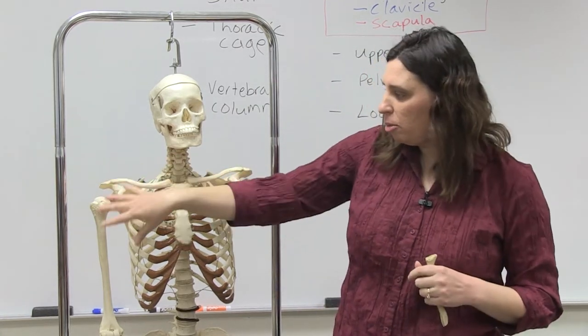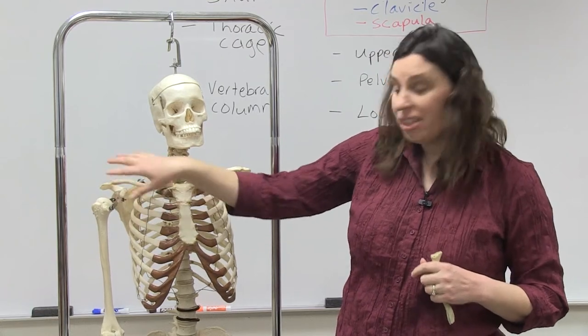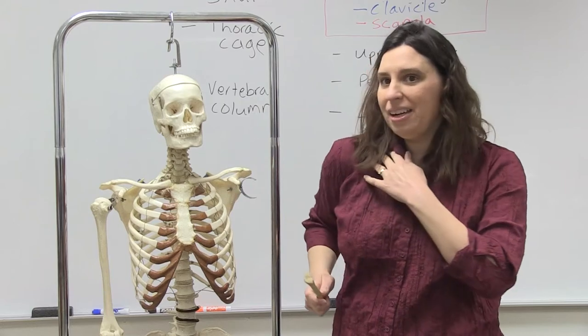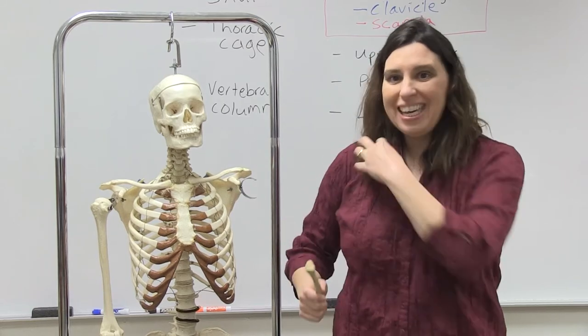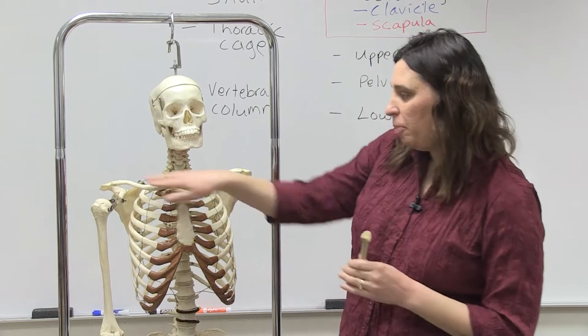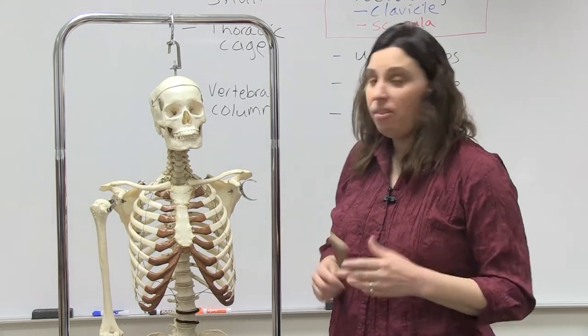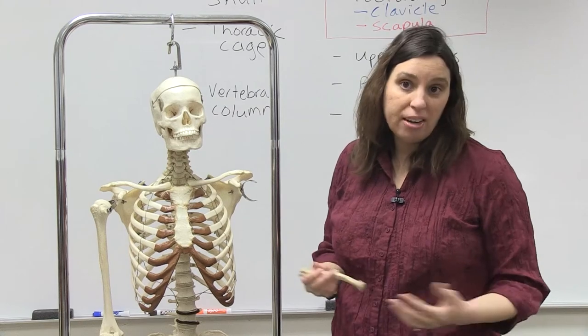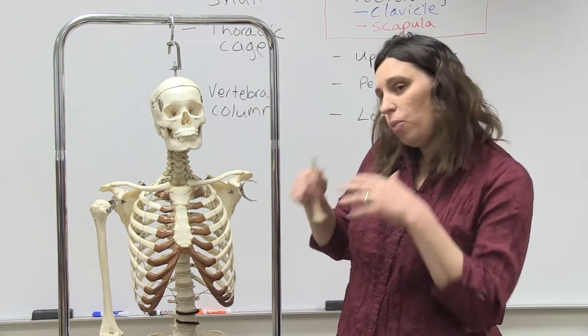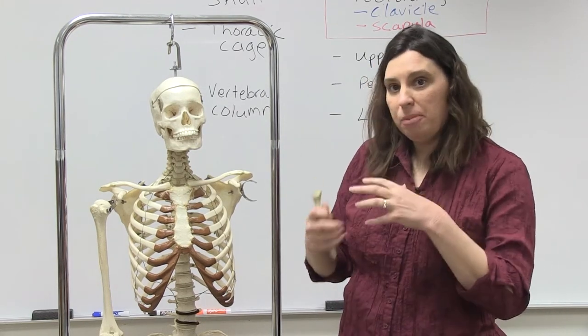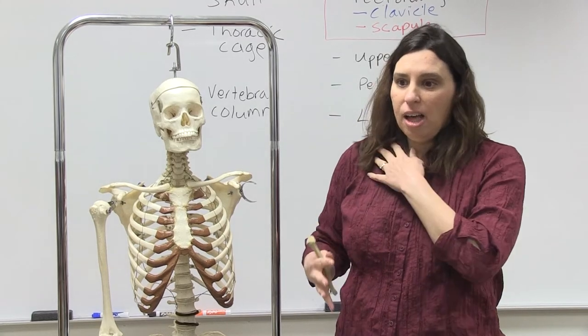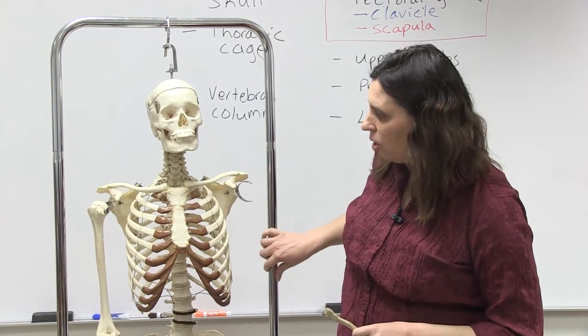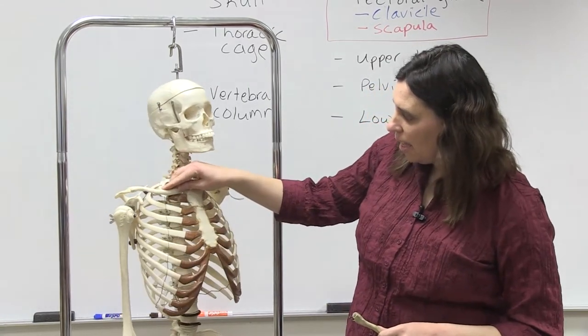But if you break this, then the shoulder, especially because of the muscles and the weight of the arm, is going to have a tendency to want to collapse inferiorly and anteriorly. And especially if you have ever had a clavicle break or fracture, then they always try to stabilize that because it can really affect the mobility of your arm.